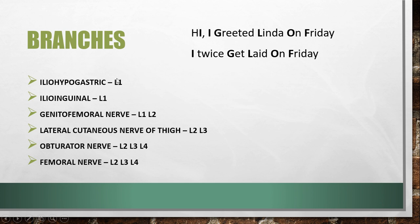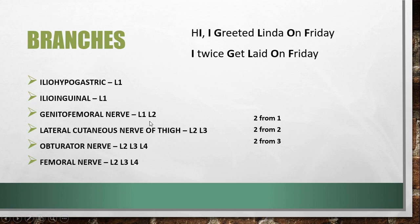As you can see, two nerves come from the single root value L1 — that's iliohypogastric and ilioinguinal. Two nerves have two root values each: genitofemoral from L1 and L2, and lateral cutaneous nerve of thigh from L2 and L3. And two nerves have three root values: obturator nerve and femoral nerve.